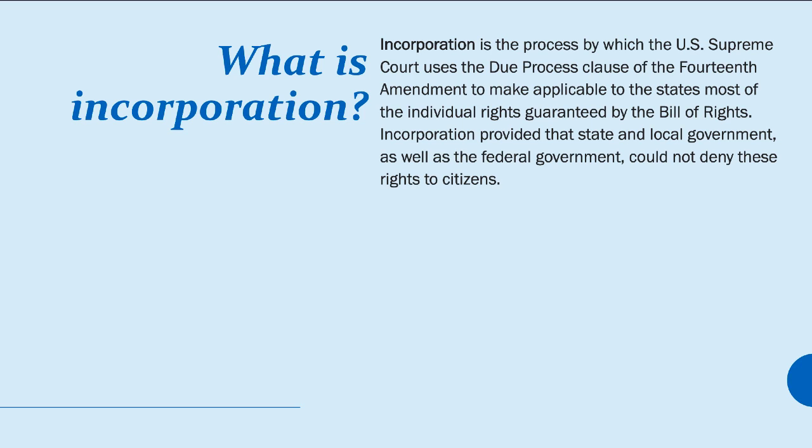Incorporation is the process by which the Supreme Court uses the Due Process Clause of the 14th Amendment to make applicable to the states most of the individual rights guaranteed by the Bill of Rights. Incorporation provided that state and local governments, as well as the federal government, could not deny these rights to citizens. States were required to uphold the First Amendment free speech clause beginning in 1925, the right against unreasonable searches and seizures in 1961, and the Sixth Amendment right to a speedy trial in 1967.